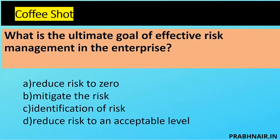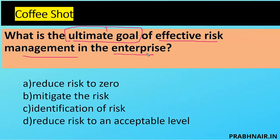Question number one: what is the ultimate goal of effective risk management in the enterprise? Option A is reduce risk to zero — that is not possible. We reduce risk to an acceptable level or reduce risk to a limited impact, but not to zero.